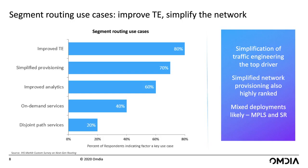In the 2018 timeframe, as segment routing was really starting to take off, we conducted a custom service provider survey to understand what network operators found attractive about segment routing and what they thought would be the key use cases. Traffic engineering — TE — came out as the top use case, with 80% of respondents citing it as very important. Traffic engineering is simply the ability to exercise control on how IP traffic crosses the network — routing traffic based on criteria such as available bandwidth, costs, physical diversity, or geographic considerations, not just the shortest path. Associated with this, the number two top driver was simplified provisioning.